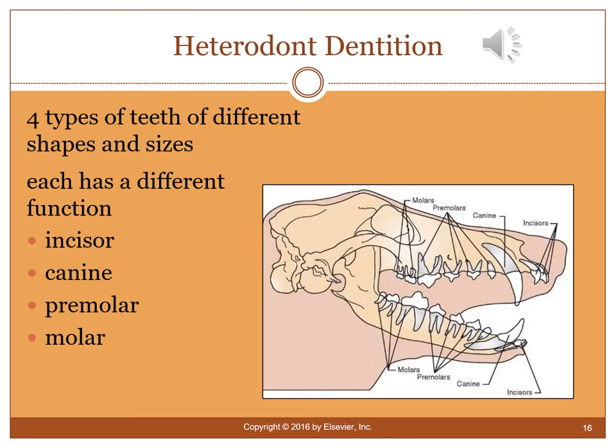Heterodentition refers to the different types of teeth — hetero meaning different. This includes incisors, canines, premolars, and molars, each with different shapes and functions.